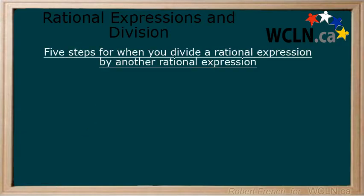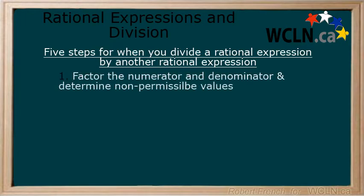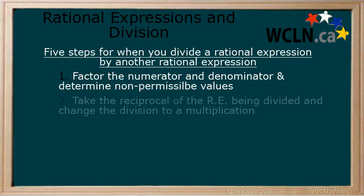There are five steps we are going to follow for dividing rational expressions together. Step 1: Factor the numerator and the denominator and determine non-permissible values.